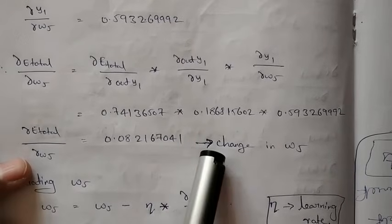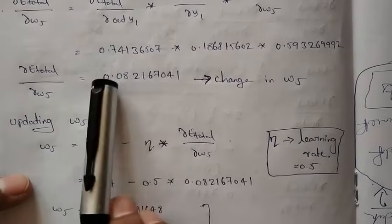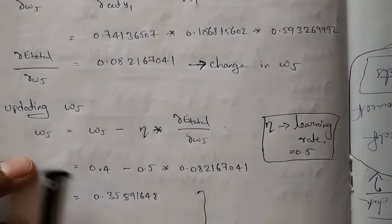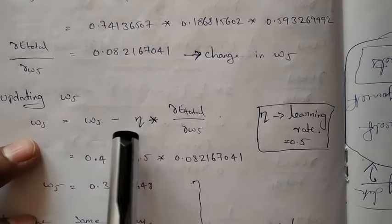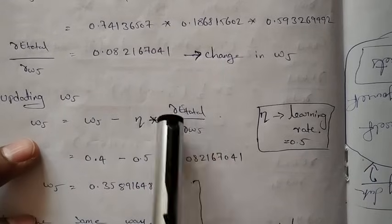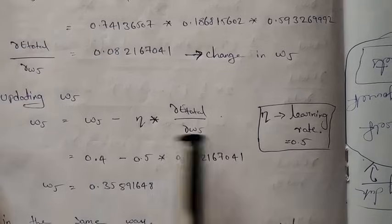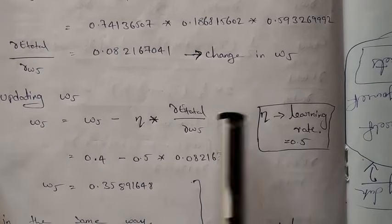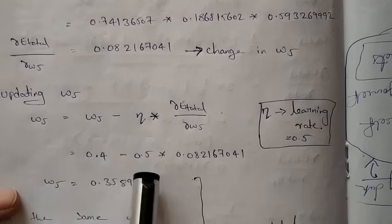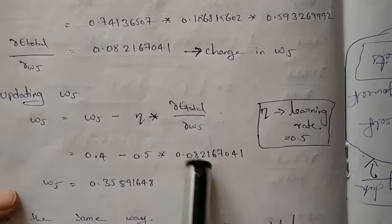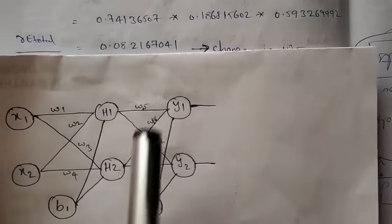This result is the change we need to make to w5. We update w5 using the formula: w5_new = w5 - η · (∂E_total / ∂w5), where η (eta) is the learning rate used for training the network. The learning rate can be any value between 0 and 1. We calculate: w5 = 0.4 - 0.5 · (the value we got). We get the updated w5 value.